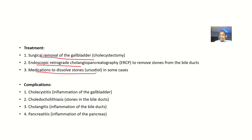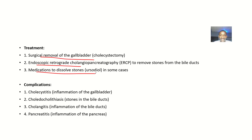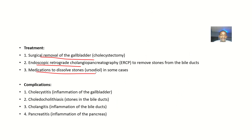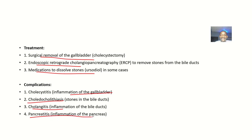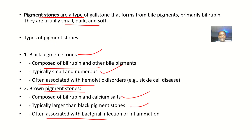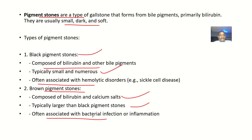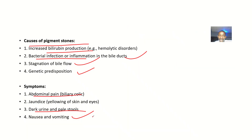Medications like ursodiol can also dissolve the stones. If left untreated, complications include cholecystitis (inflammation of the gallbladder), choledocholithiasis (stones in the bile duct), cholangitis (inflammation of the bile ducts), and pancreatitis (inflammation of the pancreas). That covers pigment stones — from definition and types to causes, symptoms, and treatment.